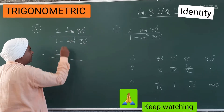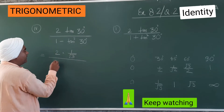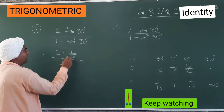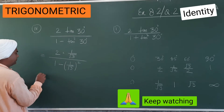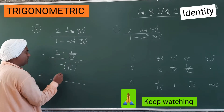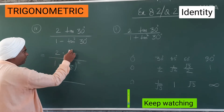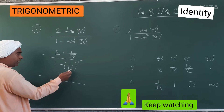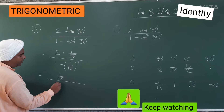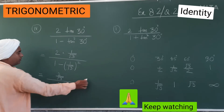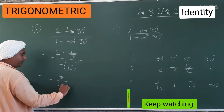We substitute: 2·tan(30°) becomes 2·(1/√3) in the numerator, and in the denominator 1 minus (1/√3)² which is 1 minus 1/3. So the numerator is 2/√3 and the denominator becomes (3−1)/3 = 2/3. So we now have the fraction 2/√3 divided by 2/3.